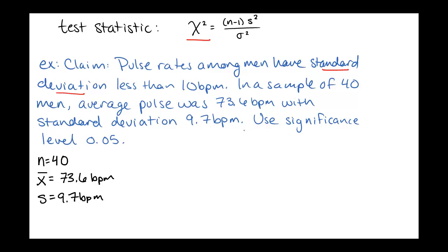And we're going to use significance level 0.05. So to start, we need to determine what our claims look like. So our original claim is that our standard deviation of the population sigma is less than 10 beats per minute. So sigma less than 10. That means that our opposite claim would be sigma greater than or equal to 10.